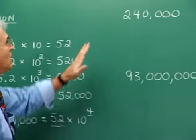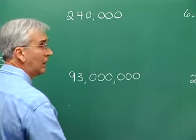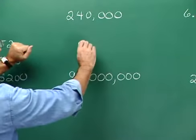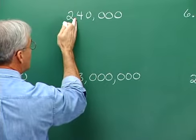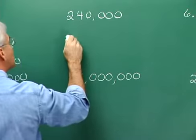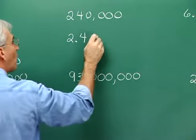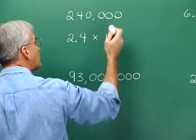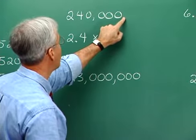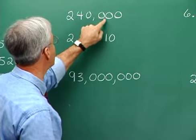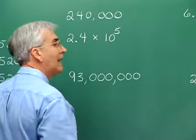Let's practice. Two hundred forty thousand — to write this in scientific notation, we slide the decimal to a position where there's one digit to the left, which gives us 2.4. So it's 2.4 times ten to some exponent. What's the exponent? We count the digits: we slid the decimal one, two, three, four, five places. So the exponent on ten is five.